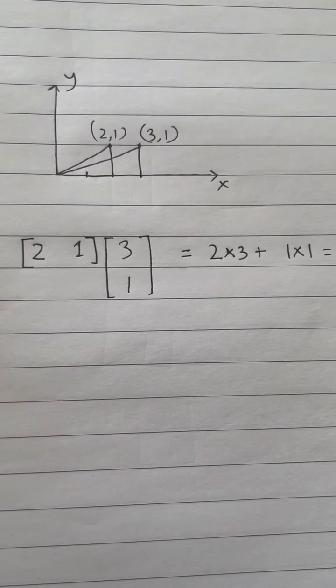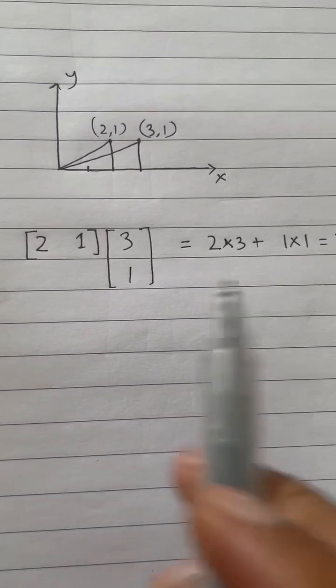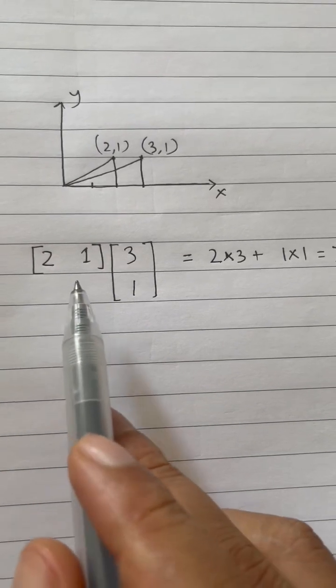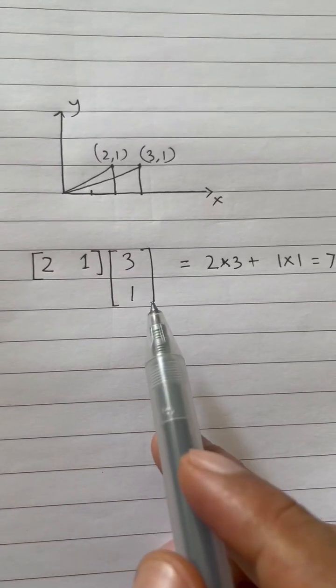Okay, so let's understand dot product. Now here I have this vector 2, 1 and I have another vector 3, 1.